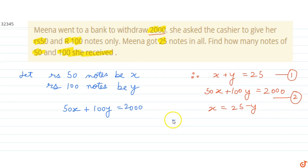Hence, the number of 50 notes is X, which is 10, and the number of 100 notes is Y, which is 15. This is the solution to our question.